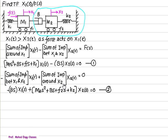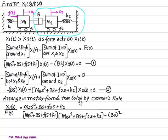And when you are writing the sum of impedance about X2, X2 is connected to M2, so all elements nearby M2. We have impedance of M2 equal to M2s square, impedance of B is Bs, F2 is F2s, similar to damper, and K2 is K2 multiplied by X2s. Finally, you write the equation 1 and 2 in matrix form, and then solve by Kramer's rule.